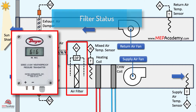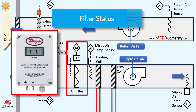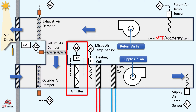The filter differential pressure sensor monitors the pressure drop across air filters. As filters accumulate dust and particulate matter, the pressure drop across them increases. An increase in pressure drop indicates that the air filters are becoming clogged with contaminants. The sensor provides real-time feedback on the differential pressure, serving as an indirect measure of filter cleanliness.